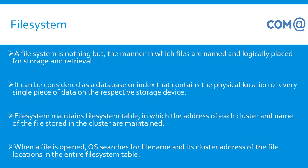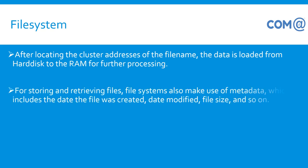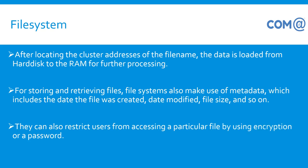When a file is opened, the operating system searches for the file name and its cluster address in the file system table. After locating the cluster address of the file, the data is loaded from the hard disk to RAM for further processing.